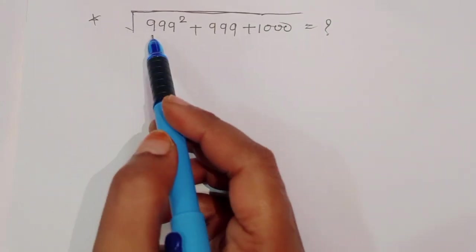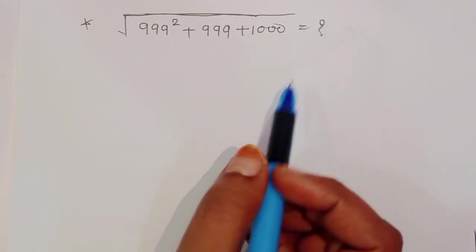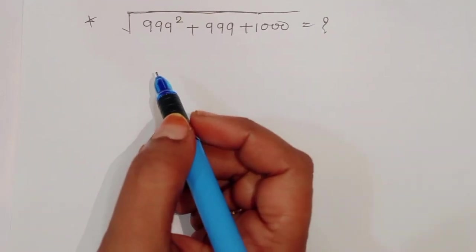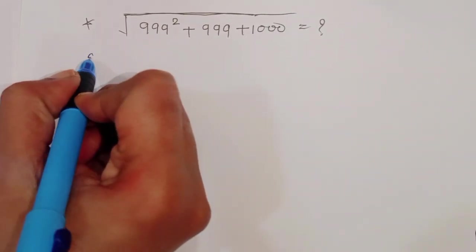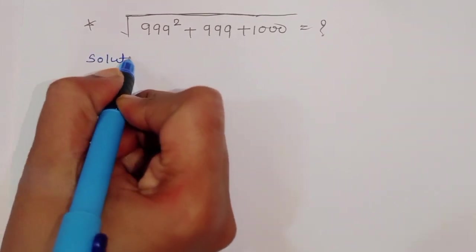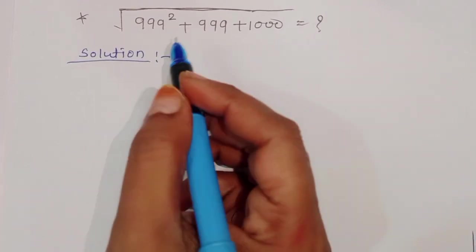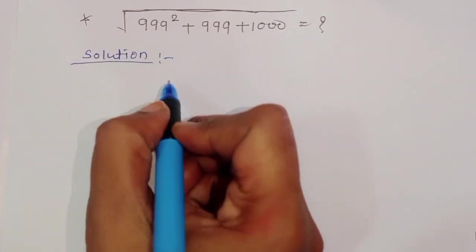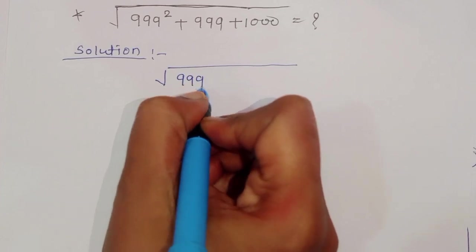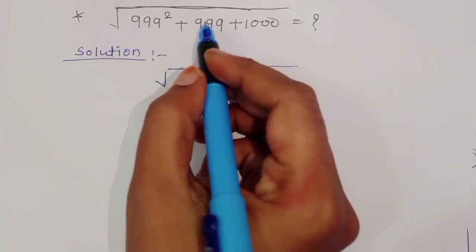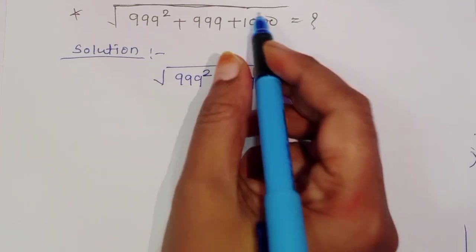The question is given: square root of 999 squared plus 999 plus 1000 is equal to what? How can we solve this type of question? Let's see the solution. First, what is given? 999 squared plus 999 plus 1000.